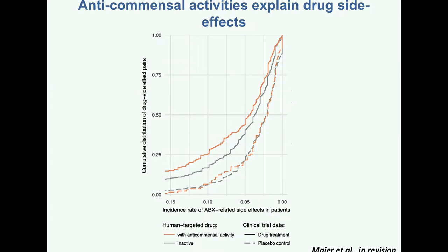If you look into the drug side effect databases and look into the side effects that host-targeted drugs have on humans, it's quite interesting to see that drugs which show a hit in our screen — meaning they are affecting commensal bacteria — tend to show side effects very similar to those you see with antibiotics. This is a kind of indirect in vivo relevance of our screen: if these drugs are affecting gut bacteria, they would also show side effects similar to antibiotics, which would also kill these bacteria.